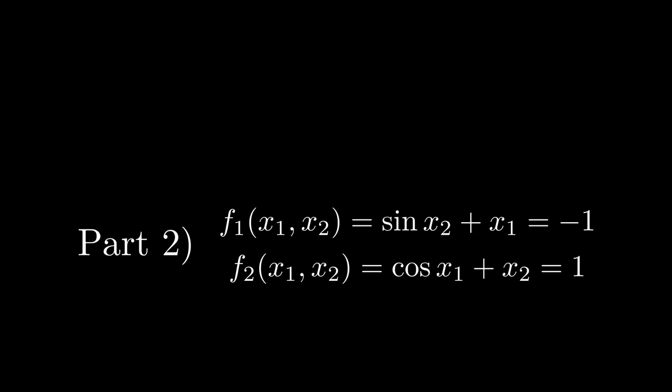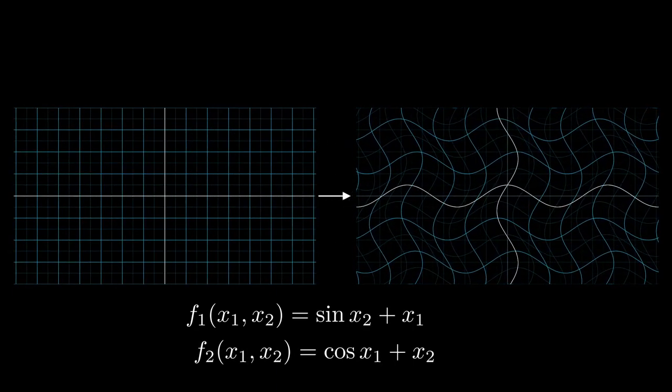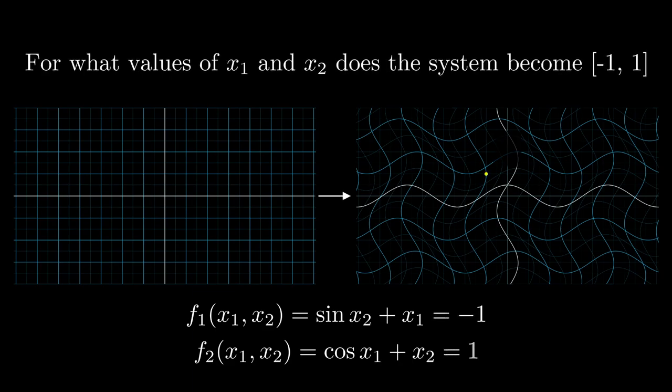Now, let's see how the algorithm functions for a system of two non-linear equations. Here is our system. For a two-dimensional input, we obtain a two-dimensional output. The objective is, for what values of x1 and x2, the system gives minus 1 and 1 as the output.